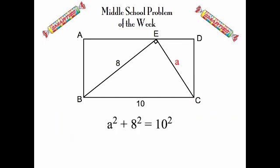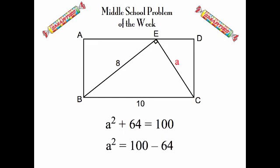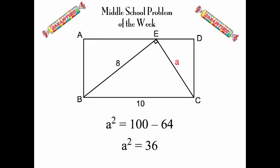In this case it's an unknown number squared plus 8 squared is 10 squared, which gives us that the unknown number squared plus 64 is 100. We subtract to get that a squared is 36, and of course the square root of 36 is 6.